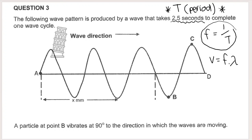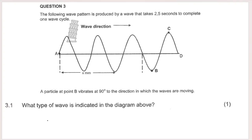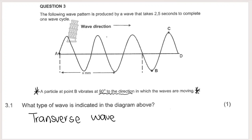An important piece of information: a particle at point B vibrates at 90 degrees to the direction in which the waves are moving. A wave in which particles vibrate at right angles (perpendicularly) to the direction of motion of the wave is known as a transverse wave. So they ask which type of wave is indicated — that is a transverse wave. If asked for a reason, you quote that the particles vibrate at 90 degrees to the direction of motion.